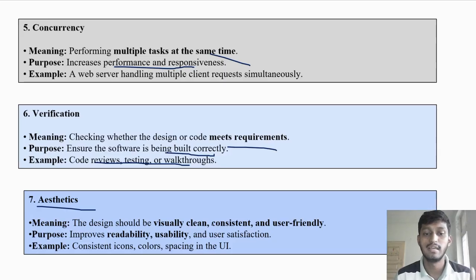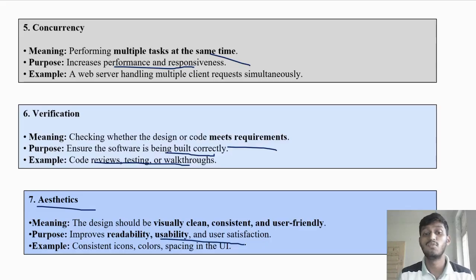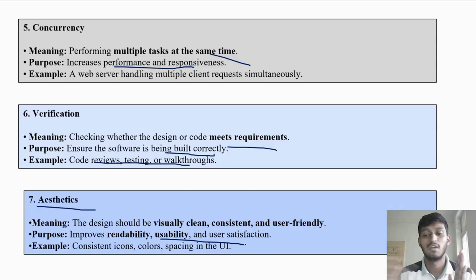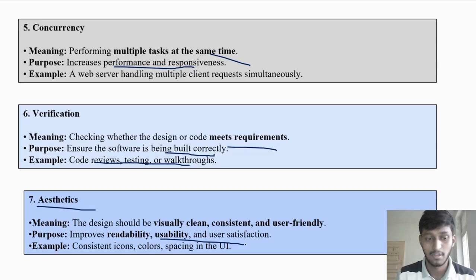Next is aesthetics, meaning the design should be visually clean, consistent, and user-friendly. The design we are creating should be visually clean — meaning simple — consistent, and user-friendly; the user should understand it. A complex user interface will confuse the user. The purpose is to improve readability, usability, and user satisfaction. If your user interface is good, the user will be satisfied. Examples include using icons, colors, and spacing to properly design the user interface.